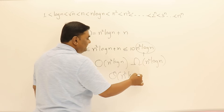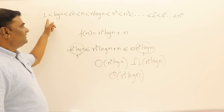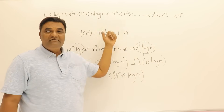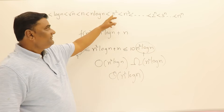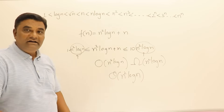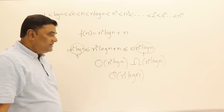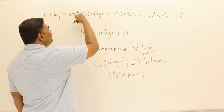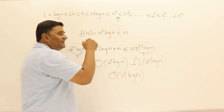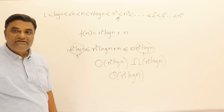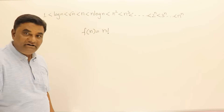Since we have n²·log(n) on both sides, this is also Theta of n²·log(n). If you observe our complexity order, n²·log(n) is not explicitly listed, but it comes between n² and n³ — it is greater than n² but less than n³. So you can specify a class for it between those two.